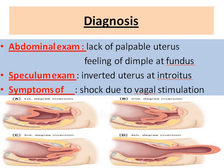We diagnose uterine inversion by abdominal examination. Whenever the baby is delivered, there is a backward push and the uterus forms an hourglass-like appearance, felt like a dimple at the umbilical level. If it is not felt that way, the uterus may be coming out of the introitus, and by doing a speculum examination we can see it at the introitus.